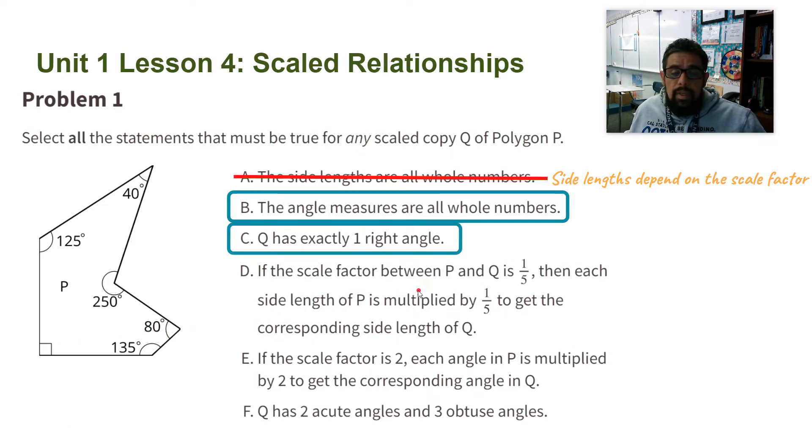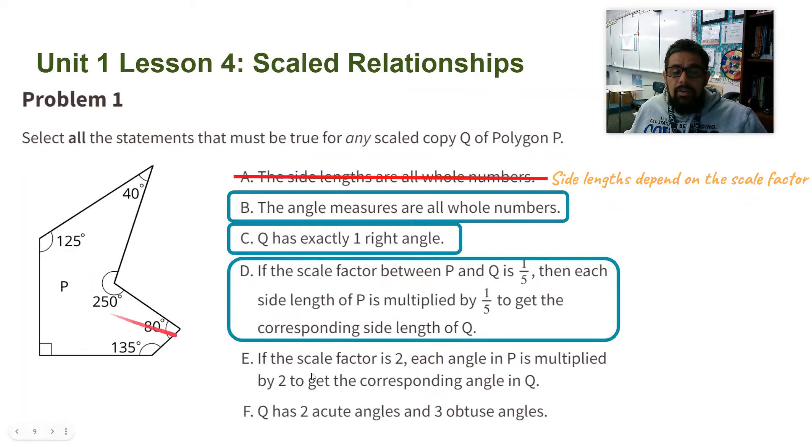Part D: If the scale factor between P and Q is one-fifth, then each side length of P is multiplied by one-fifth to get the corresponding side length of Q. This is true. Anytime you have a figure and a scale factor, you multiply every single side by the same number to get the new side lengths. That's what scale factor means.